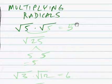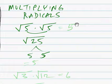Root 5 times root 5. We multiply these two, gives us 25. Then we factor it. 5 times 5 equals 25. So the answer, in fact, is 5.